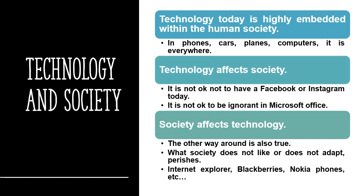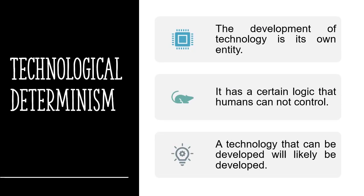Some examples of technologies discarded by society include Blackberry, Nokia, DVD players, and VCRs. This got thinkers and philosophers thinking about the origin of technology and how it functions.